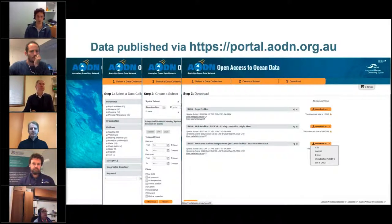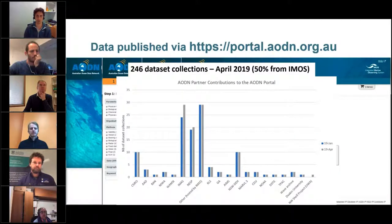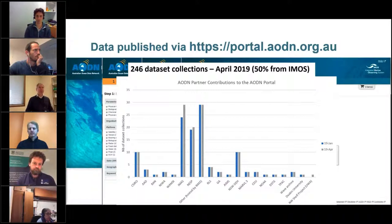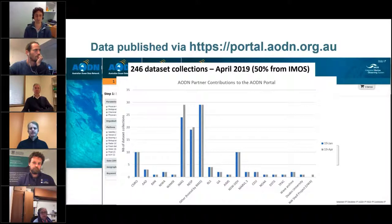The focus of the AODN portal in recent years has been search, discovery, and data access — really enabling users to download data at the end of the workflow. Four years ago we released the portal, initially working only with 100% IMOS collections. Since then we've connected different national repositories, and we've now grown to almost 250 dataset collections on the portal, with 50% from IMOS and 50% from other organisations.